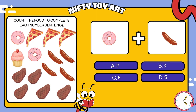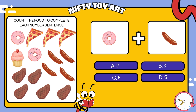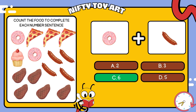We have donuts and sausages. How many foods is that in total? That's right, six.